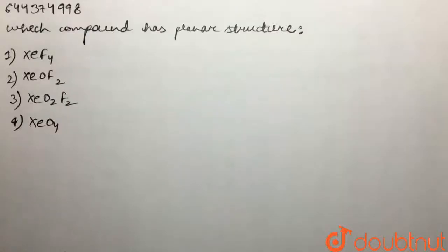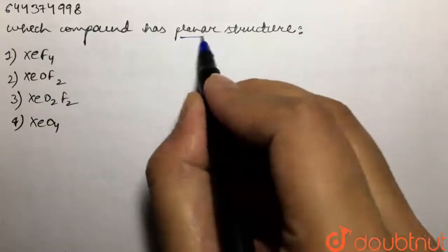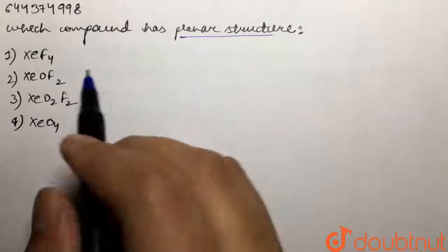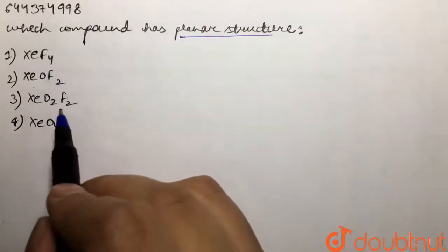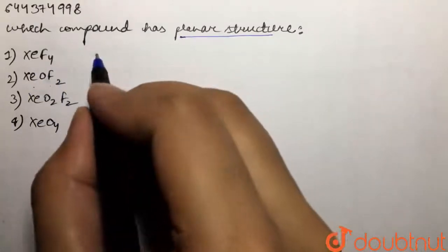Our question is: which compound has a planar structure? XeF4, XeOF2, XeO2F2, or XeO4?